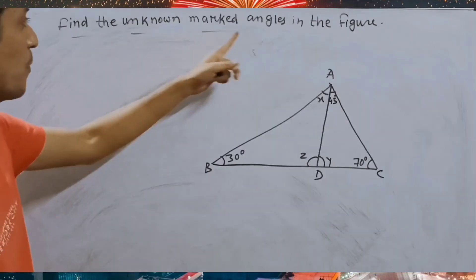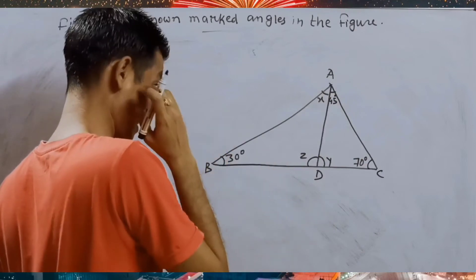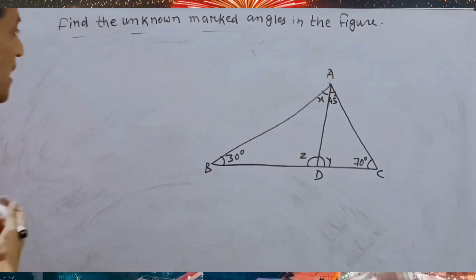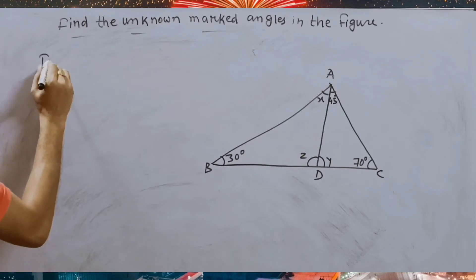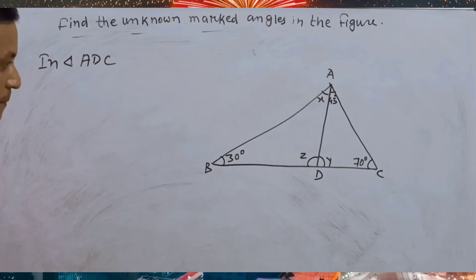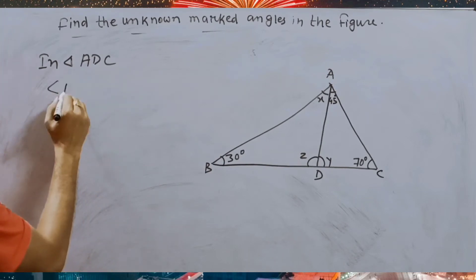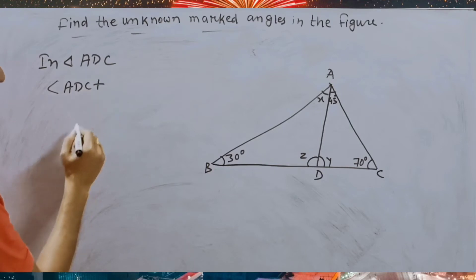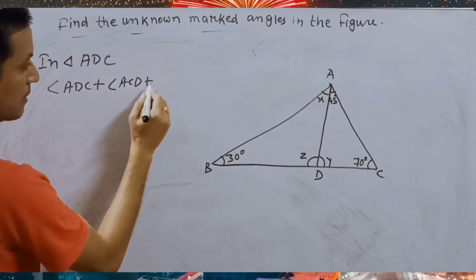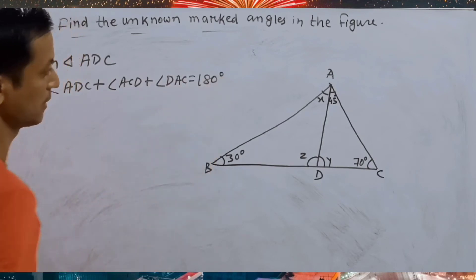Find the unknown marks in the figure where triangle ABC is divided into parts ABD and ADC. In triangle ADC, angle ADC plus angle ACD plus angle DAC equals 180 degrees.